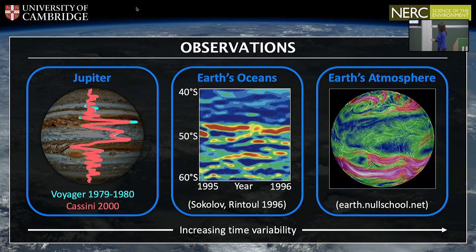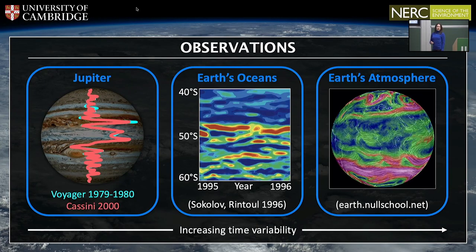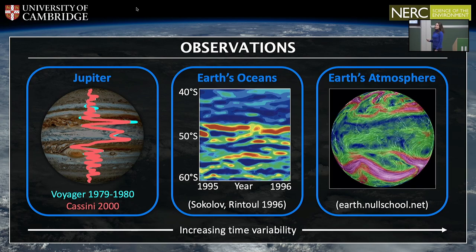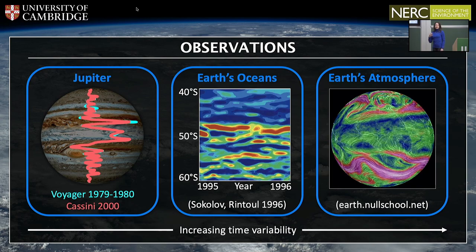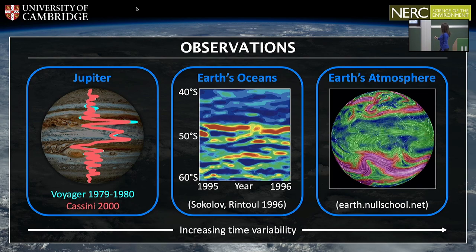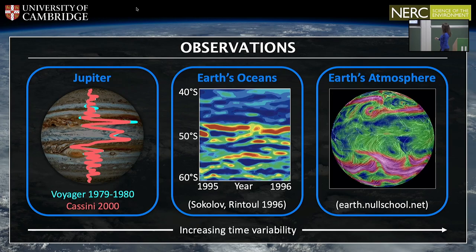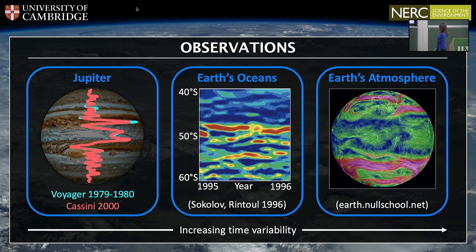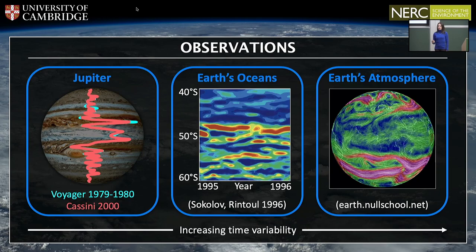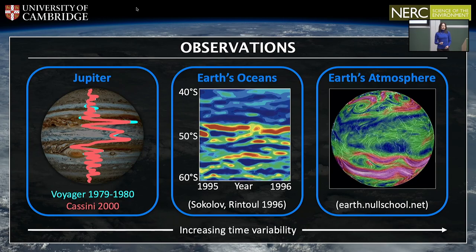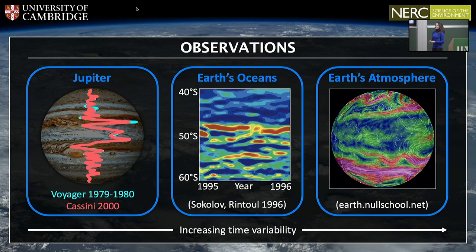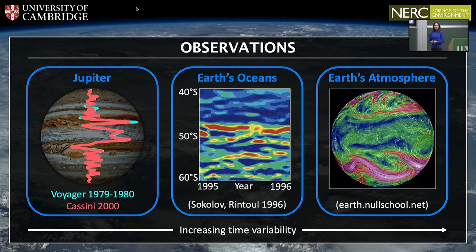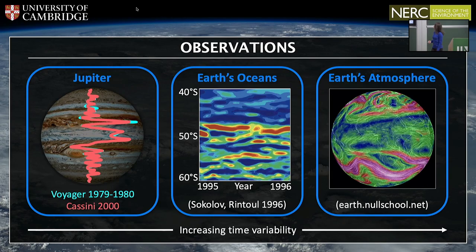In the Earth's atmosphere, the jets are observed to vary over timescales of the order of days. I've compiled a movie using data from a website where a single second corresponds to a single Earth day, and you can see that there's a significant amount of variability on a daily basis.